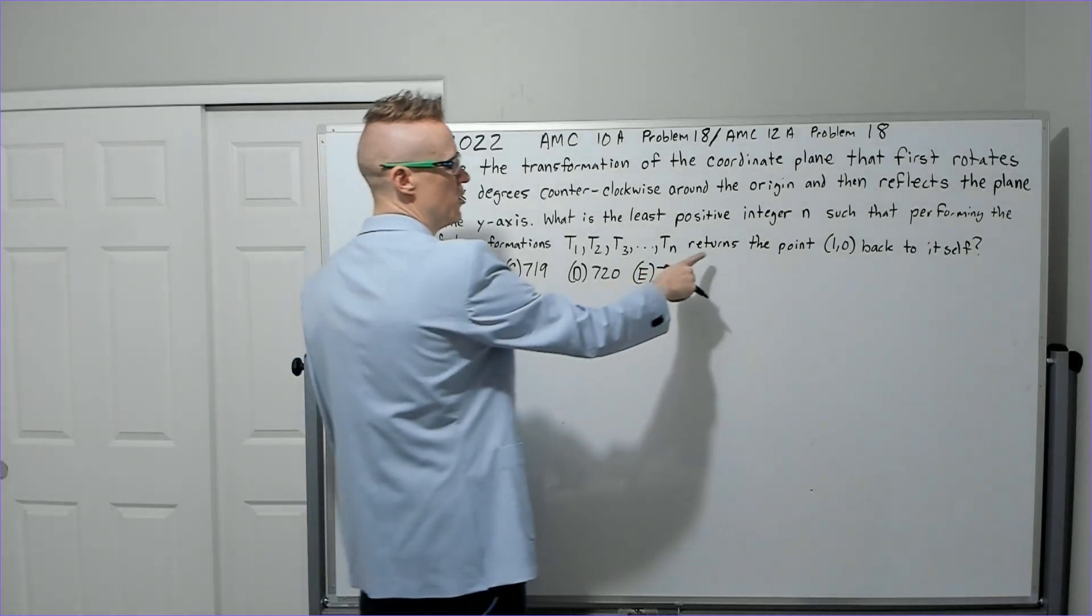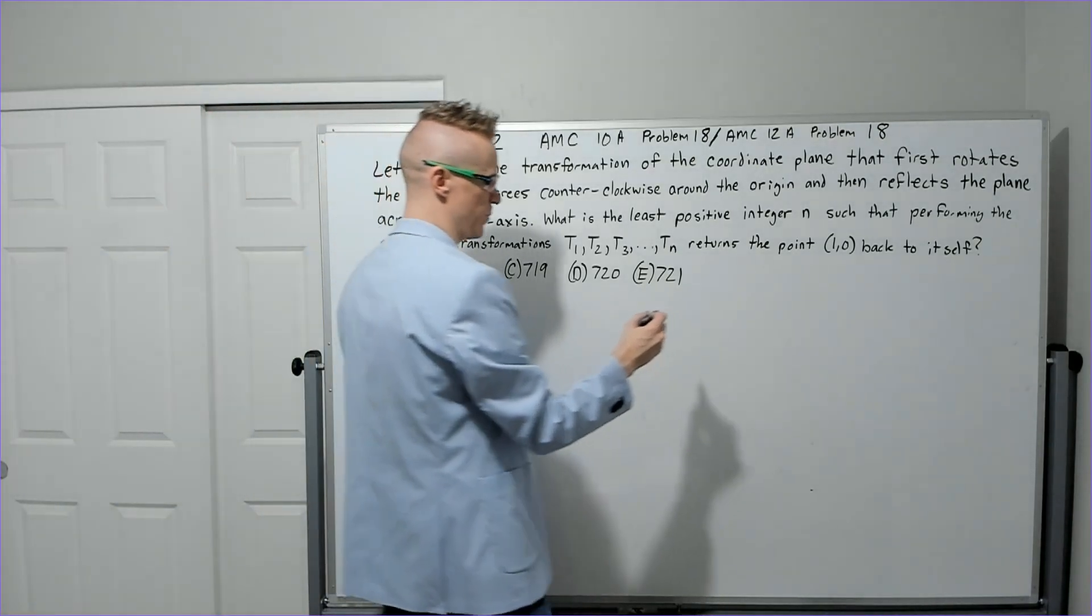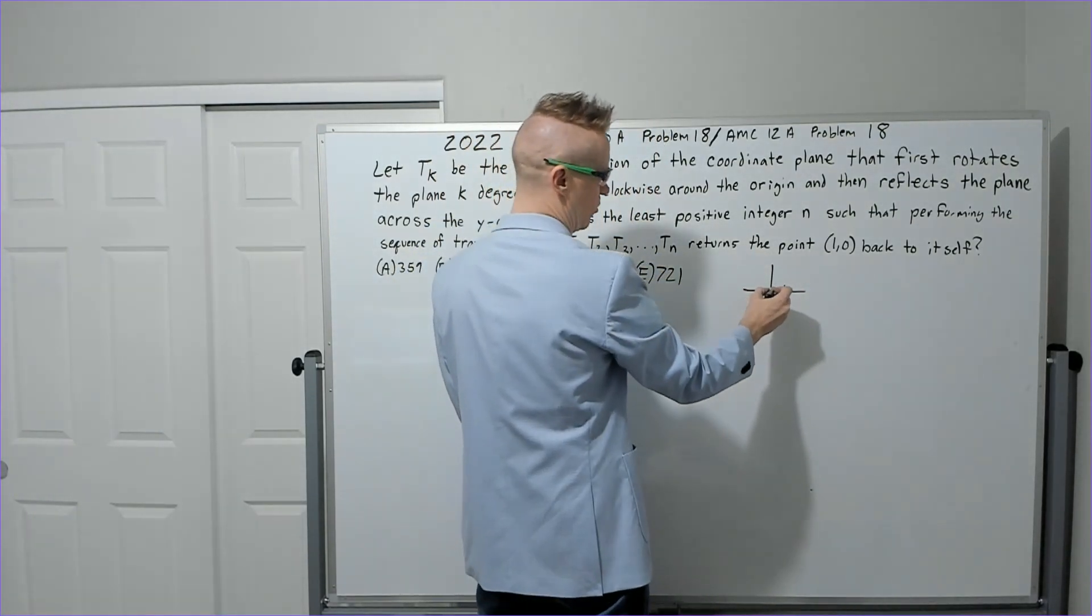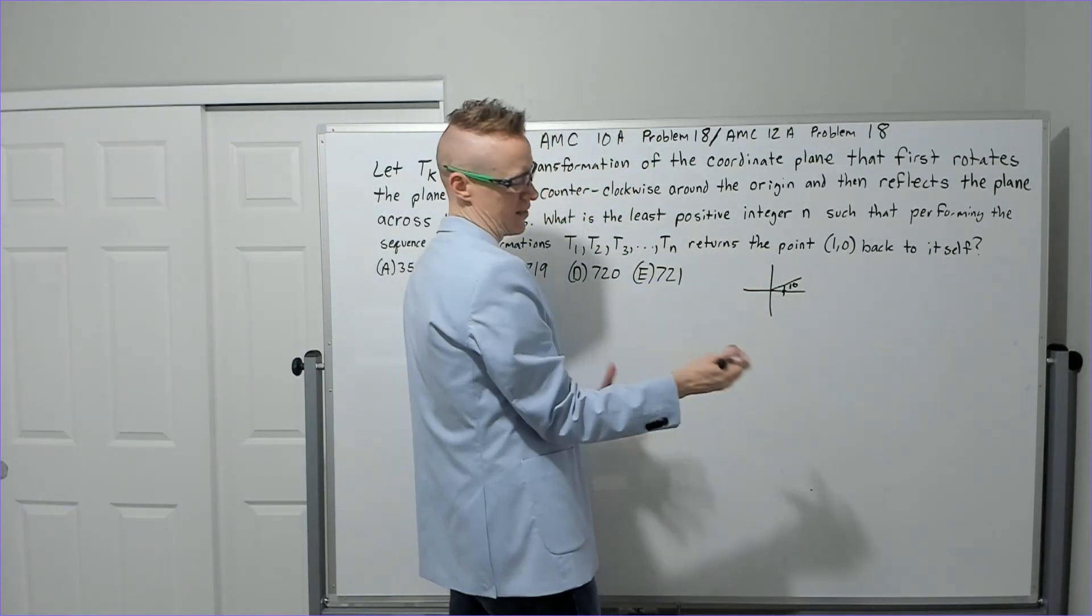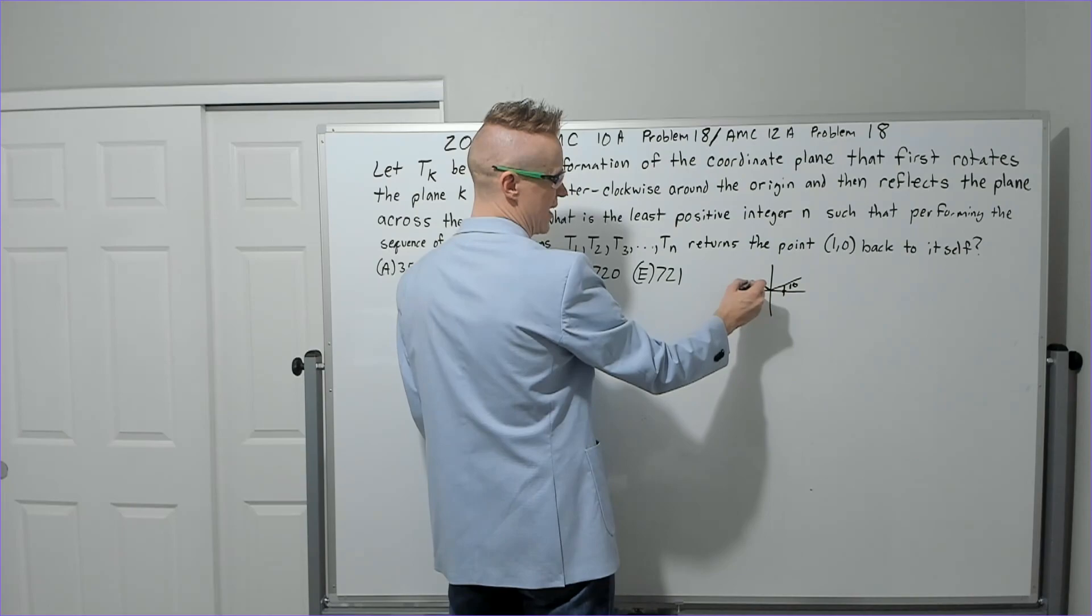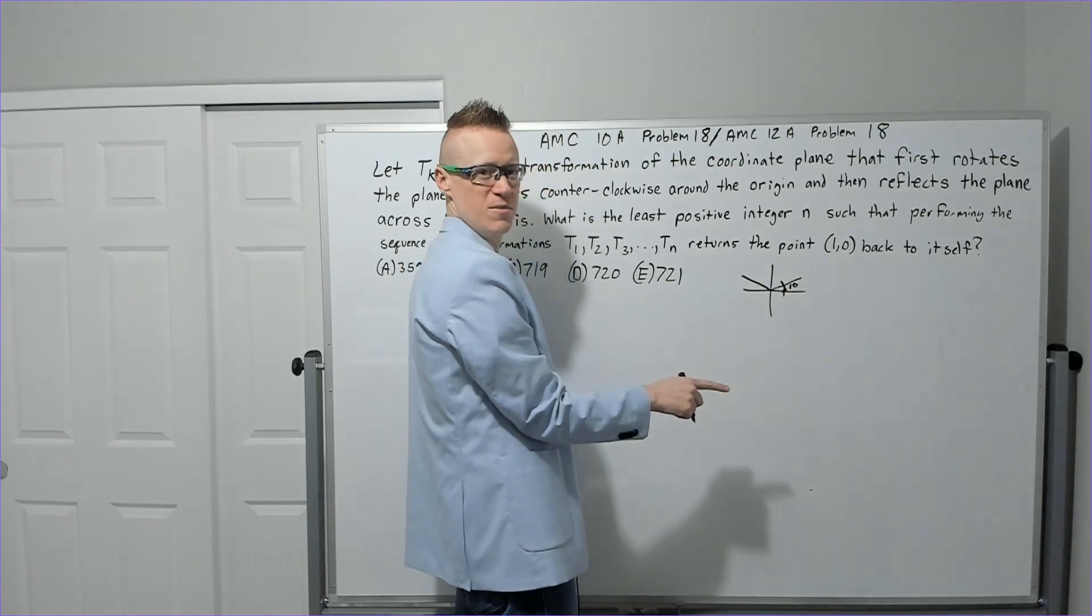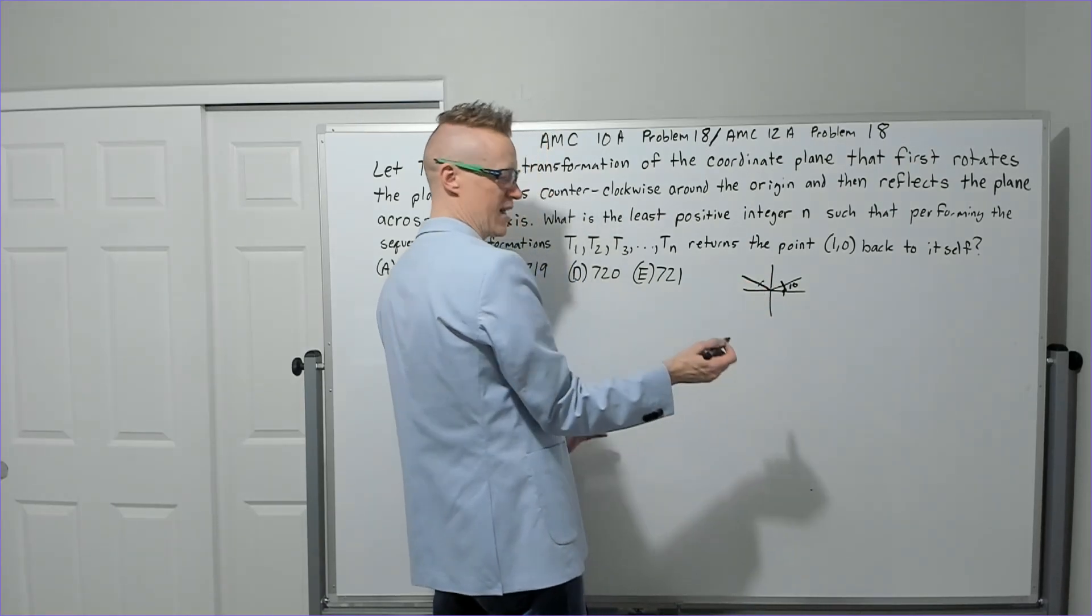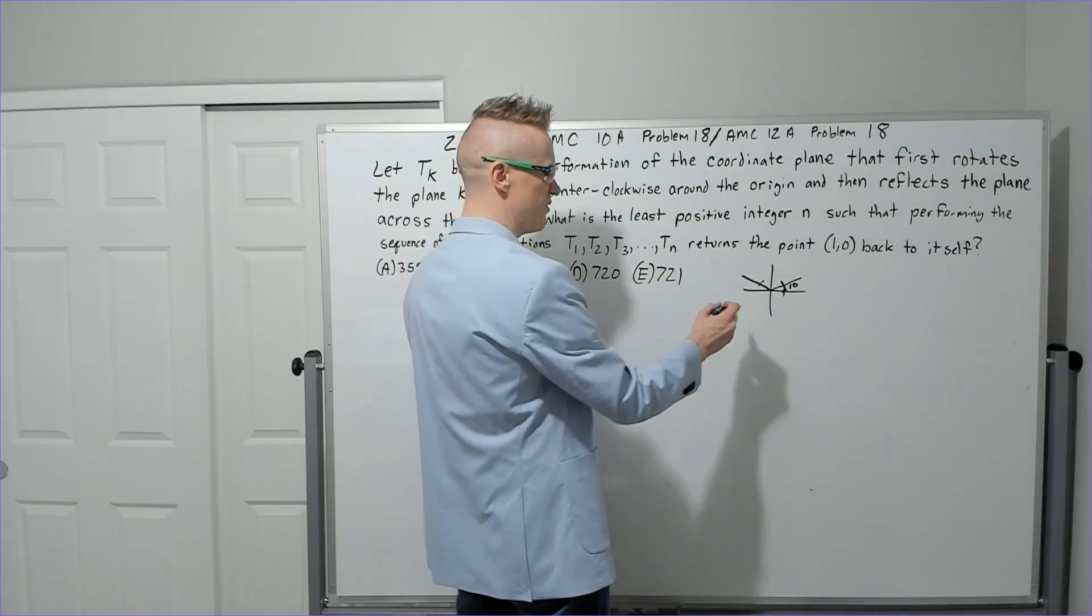So what I did is I first drew a picture to kind of make sense of it. For instance, (1,0) is right here. If I rotate the whole plane one degree, it would be something like this where this angle is one degree with the x-axis. Then you reflect it over the y-axis, which is going to put it over here. When you rotate the plane, it's still going to be one unit from the origin. When you reflect it across the y-axis, the distance from the origin is still one unit.